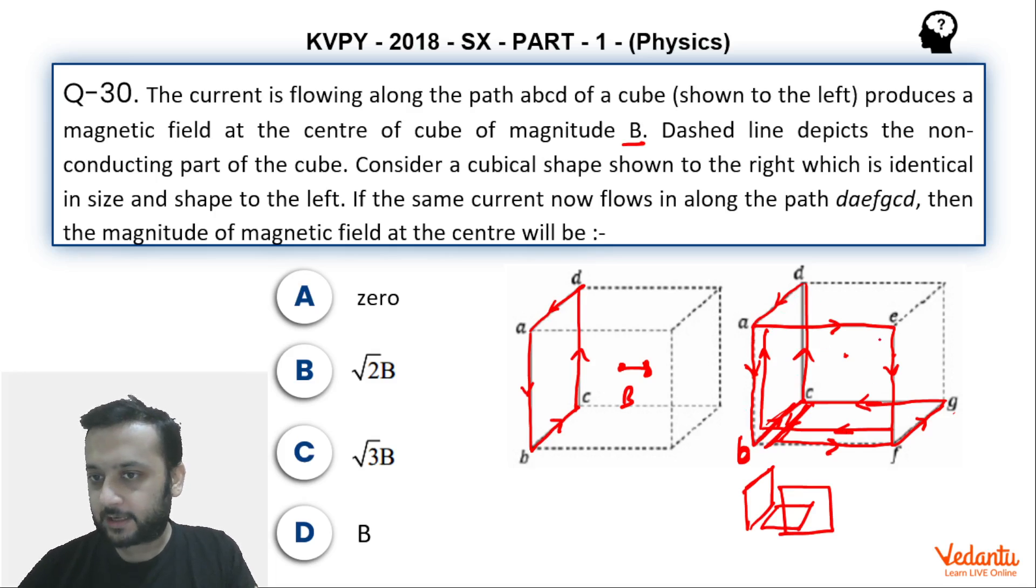Yeh jo square, yeh wala AEFB, AEFB yeh wala square jo hai, iski wajah se magnetic field will be going inside. Magnitude will be B only, direction will be going inside.